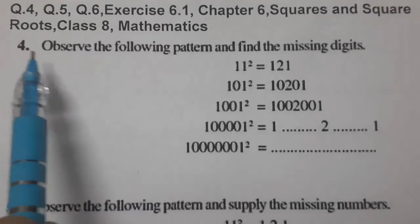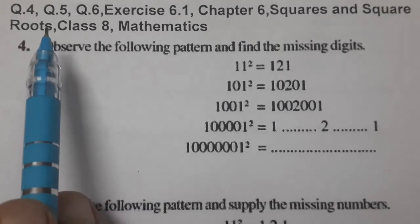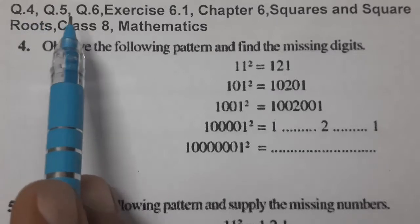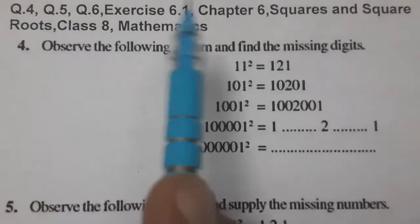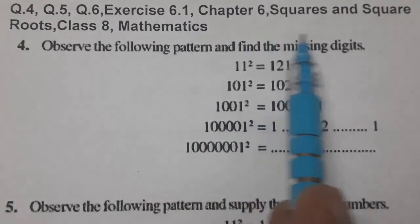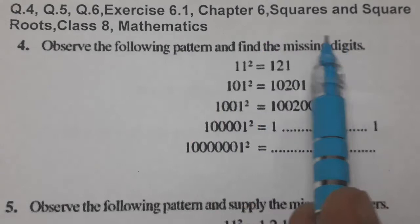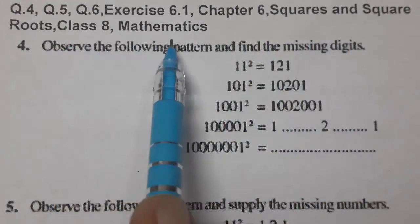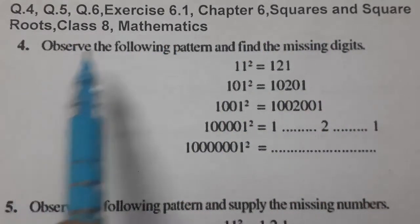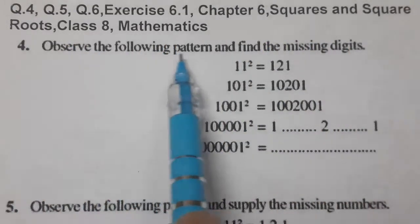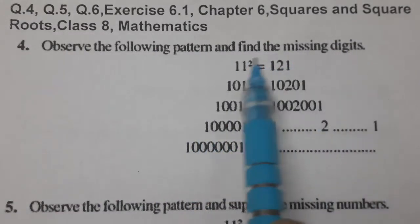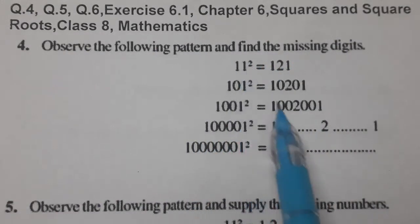Hello students, today we are going to do three questions — four, five, and six of Exercise 6.1, Chapter 6: Square Roots, Class 8 Mathematics. Question four: observe the following pattern and find the missing digits.